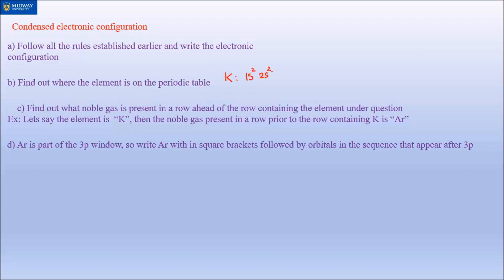Keep in mind I've made sure my configuration is right. So 3s2, 3p6, and 4s1. So basically argon is in the 3p window, right? So basically you strike off everything where the argon is located, so you basically replace all of this with Ar and write whatever is left.